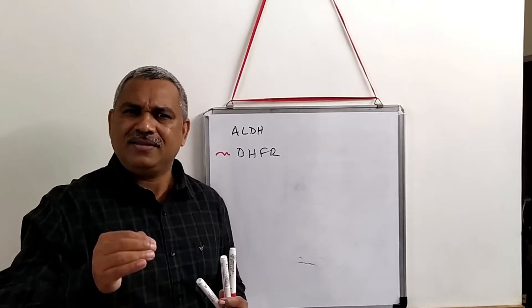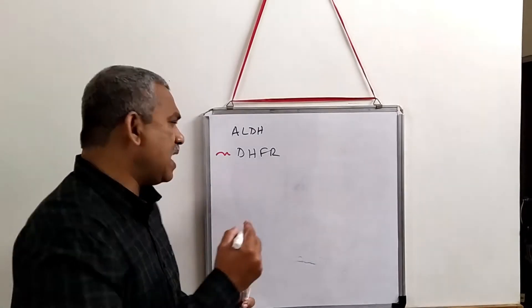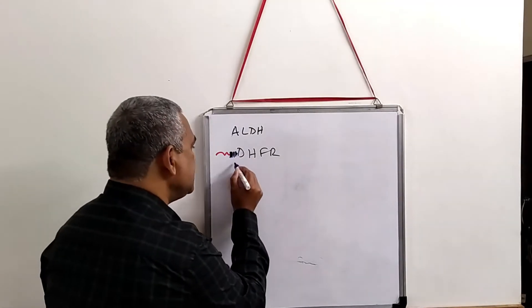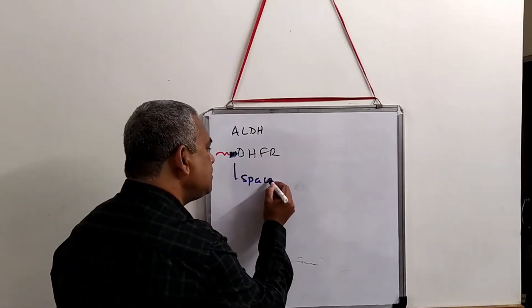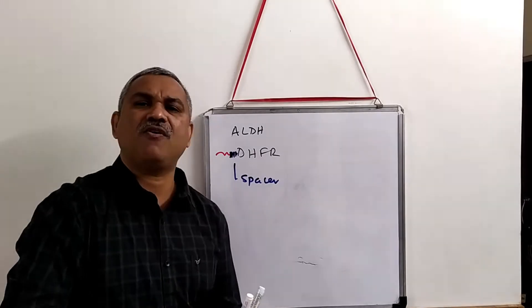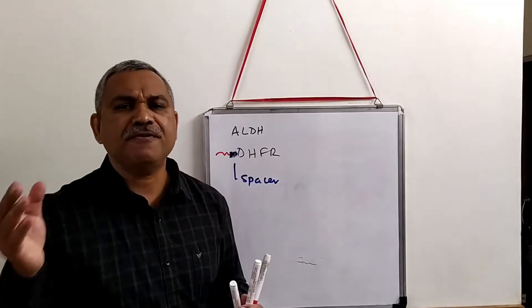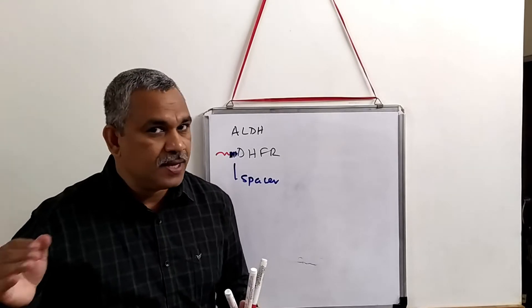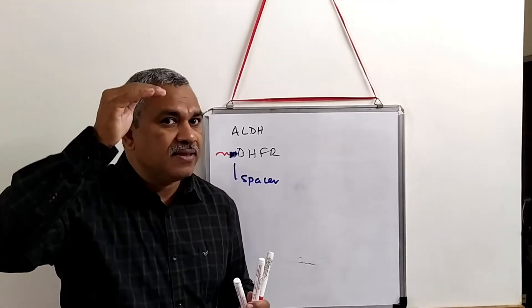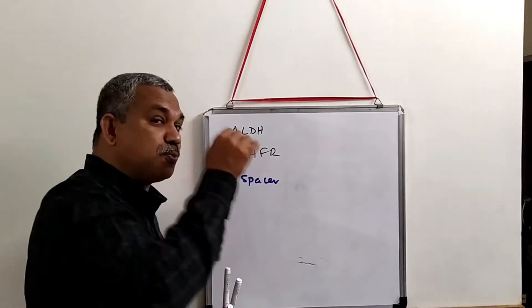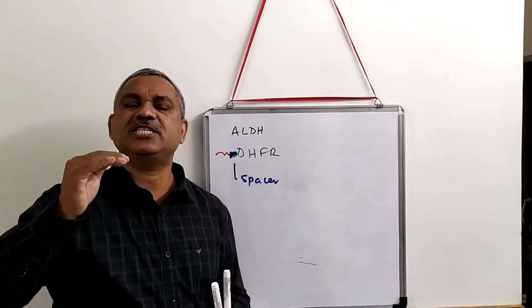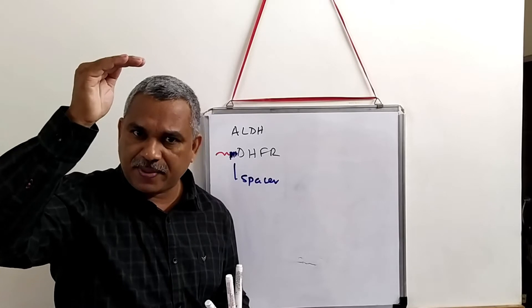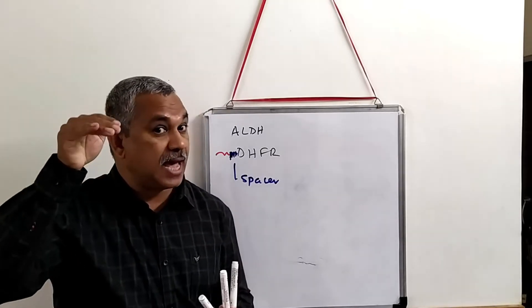They did an additional step — they introduced a spacer. A spacer is a set of about 50 non-specific amino acids; it has no function. What they wanted to check is to ensure that this protein covers the distance of the outer mitochondrial membrane, the intermembrane space, and the inner mitochondrial membrane.